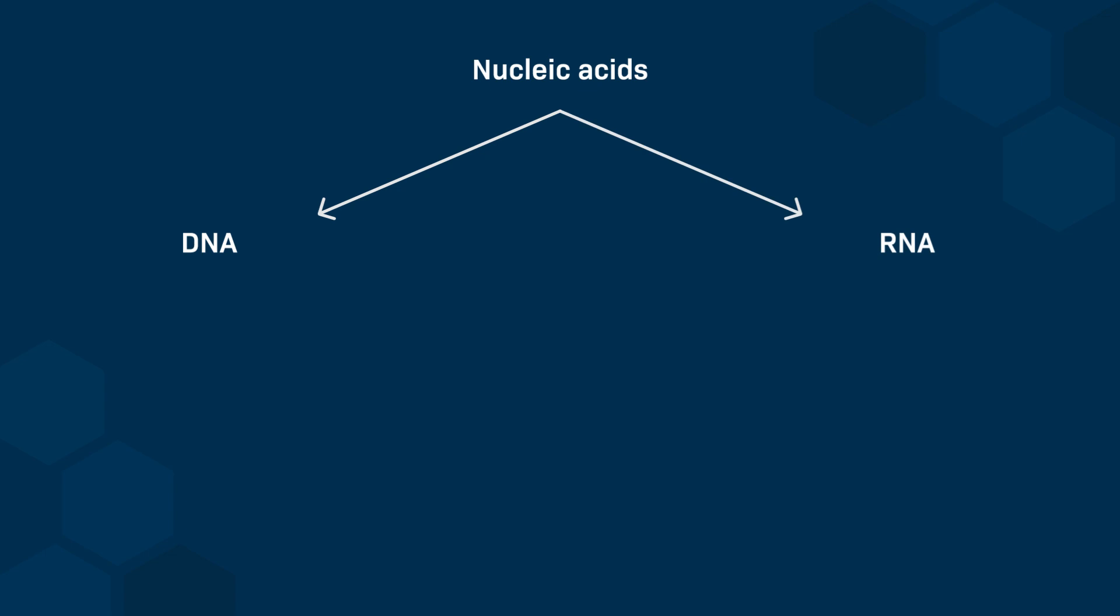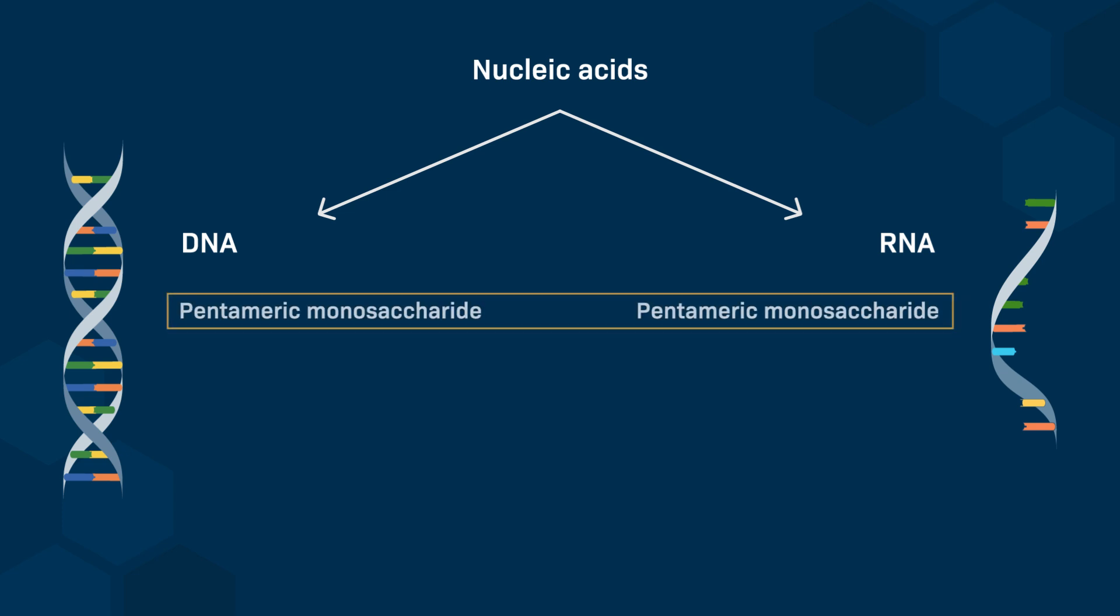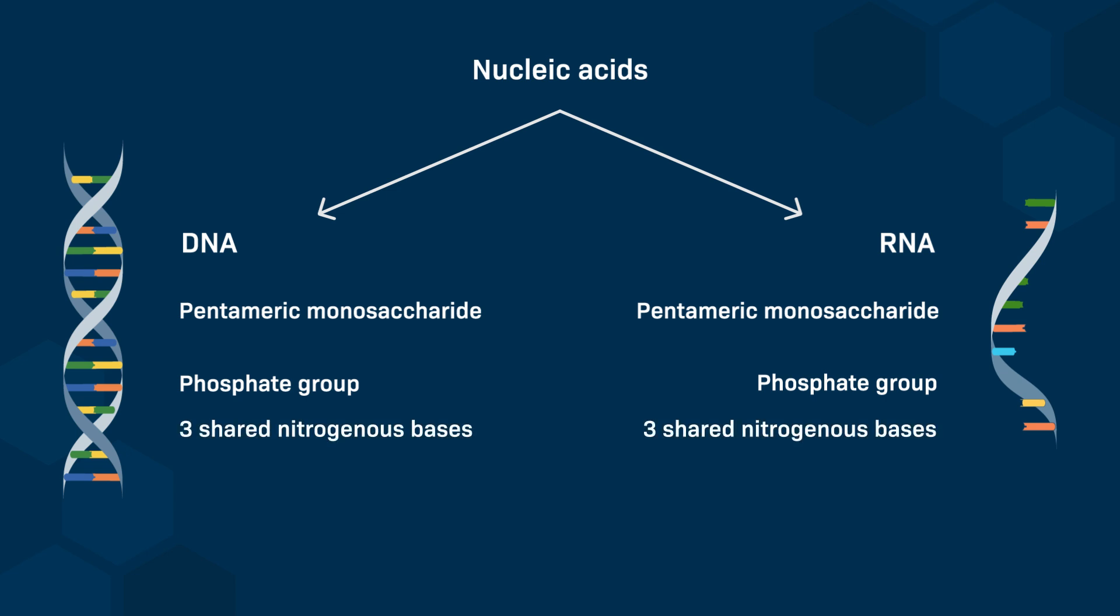DNA and RNA differ in the chemical structure of these nucleotide building blocks. Both deoxyribonucleotides in DNA and ribonucleotides in RNA are made up of three components. The first component is a pentameric monosaccharide, the second is a phosphate group, and the third component consists of nitrogenous bases, three of which are found in both DNA and RNA.